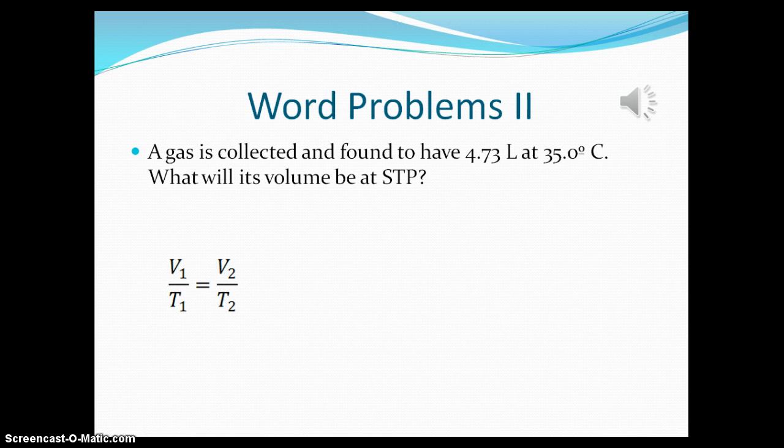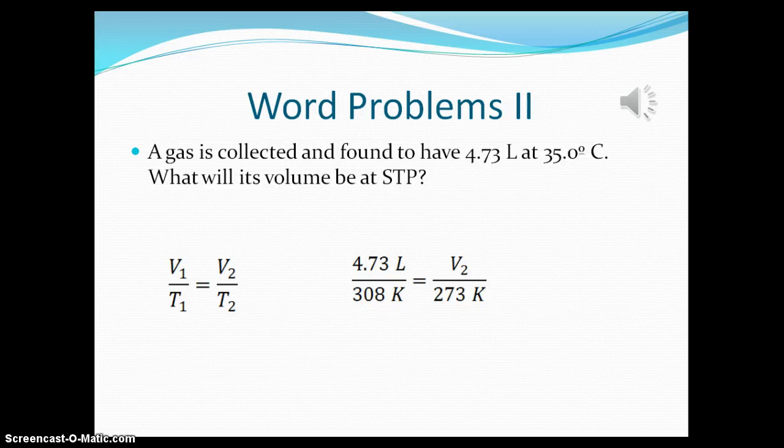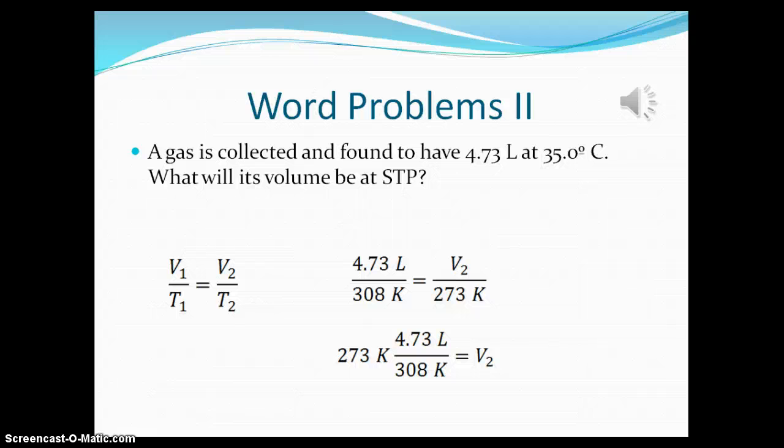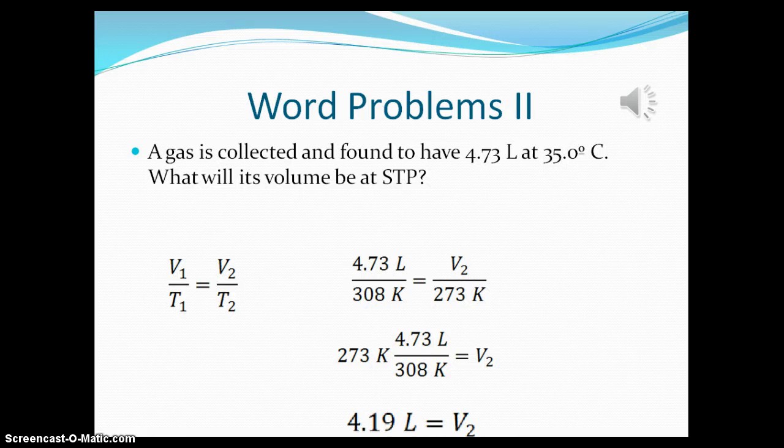So after plugging in all our variables, the V1, the T1, and the T2, we're going to need to solve for V2. To do that, we're going to multiply both sides by 273, and we get 273K times 4.73 liters divided by 308 Kelvin. And when we do all the math, we should get a final answer of V2 equals 4.198 liters.